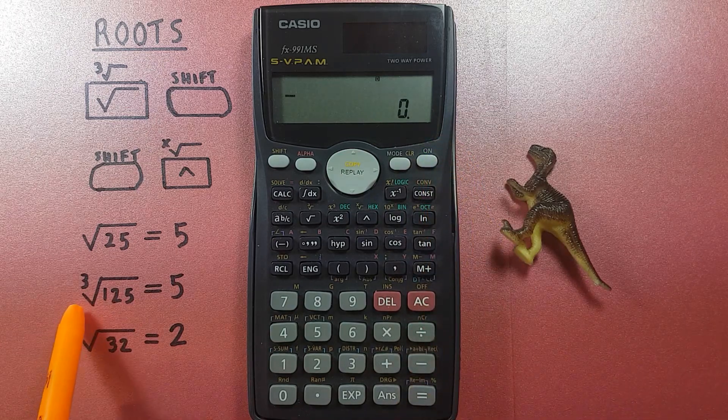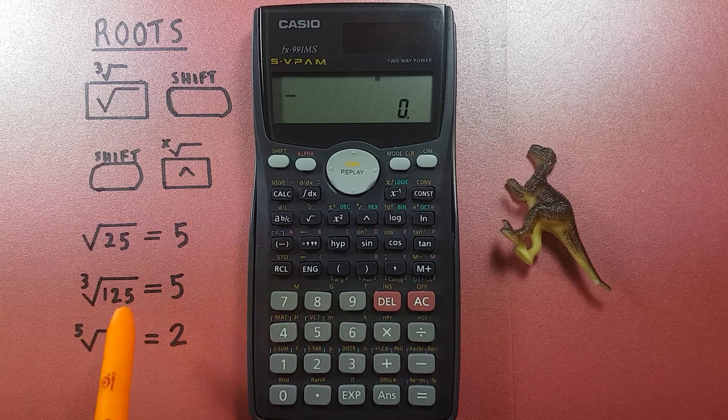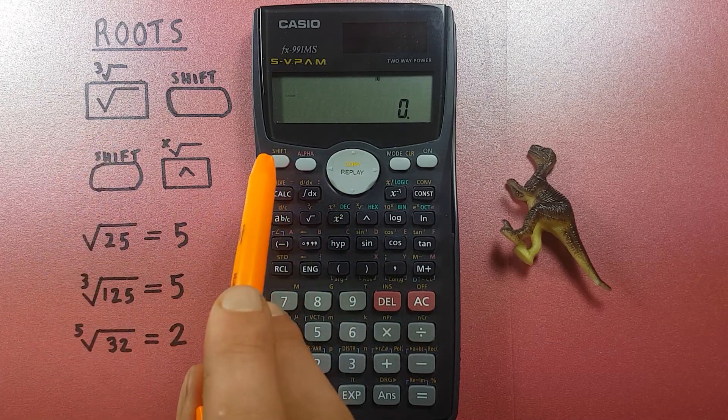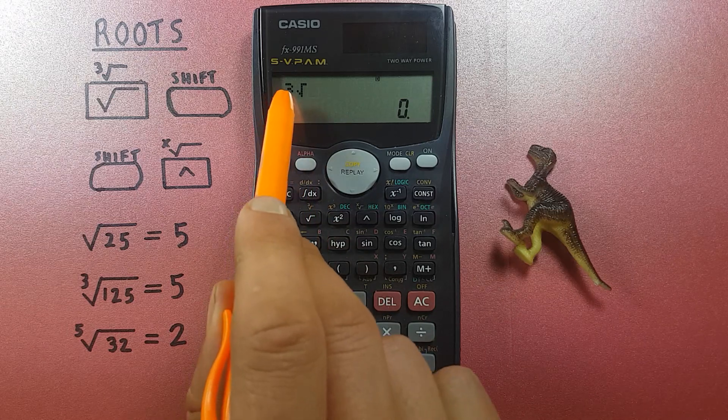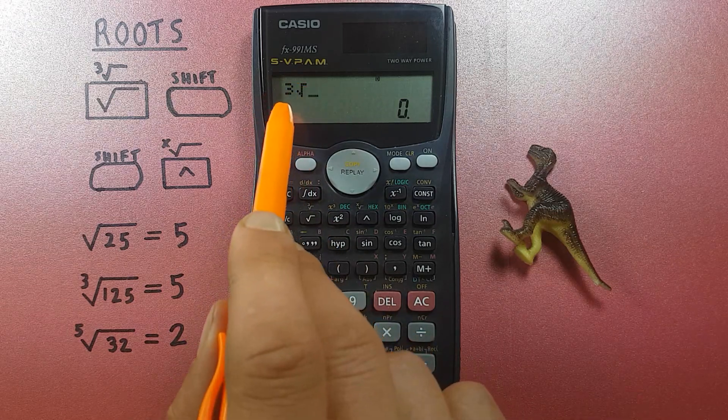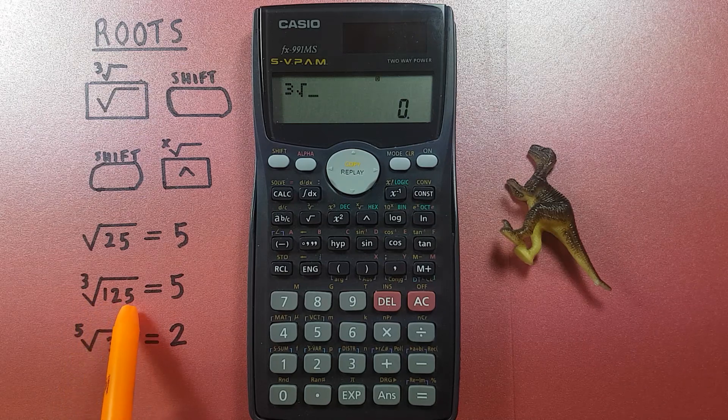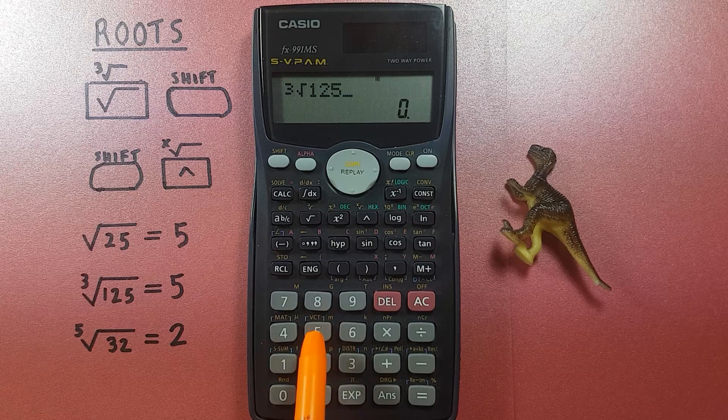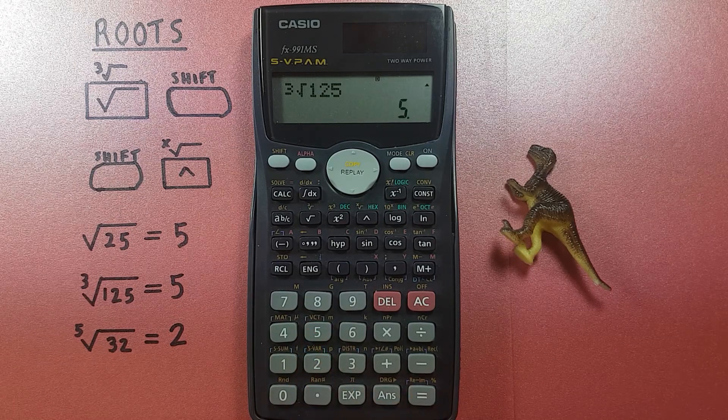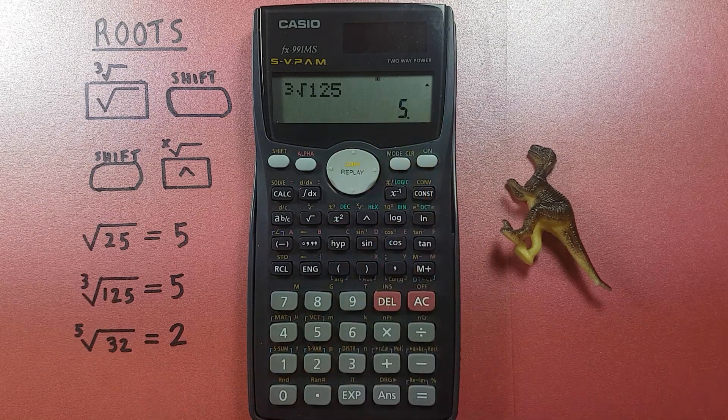If we want to find a cube root, we use the second function of the square root button. So we start with shift square root and we see cube root, and then enter the number we're trying to cube root, in our case 125, and press equals and it gives us the result.